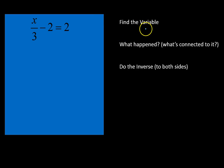For our final question, what we're going to do is deal with a question that has a fraction in the question. So, we're going to find the variable, ask what happened or what's connected to it, and then do the inverse step by step. Our variable is x. We want to get x completely by itself. To do that, we have to undo dividing by 3 and subtracting 2.